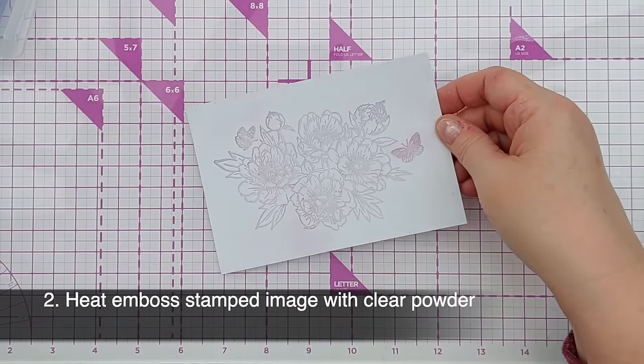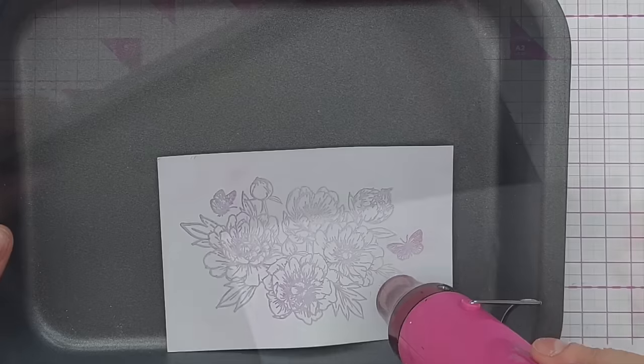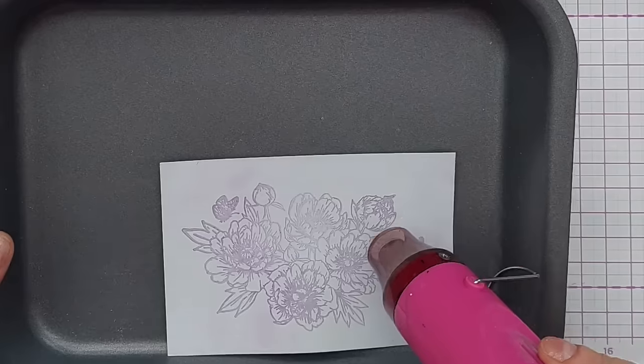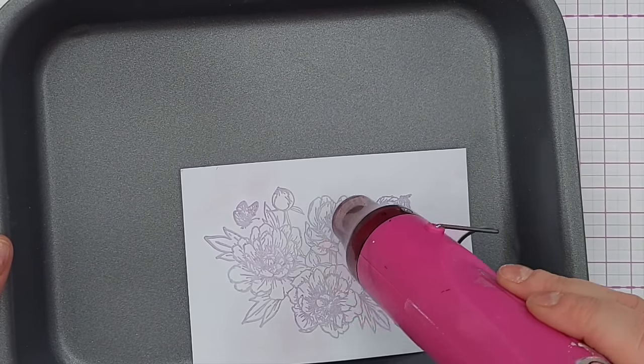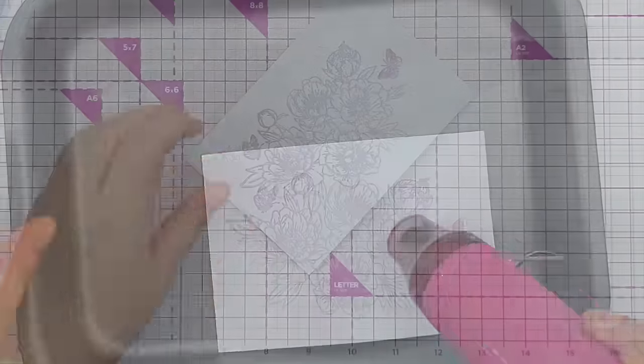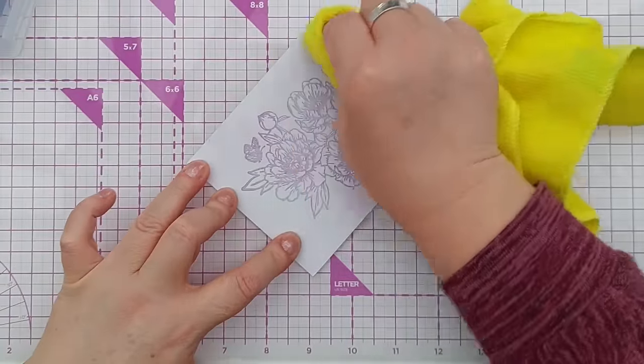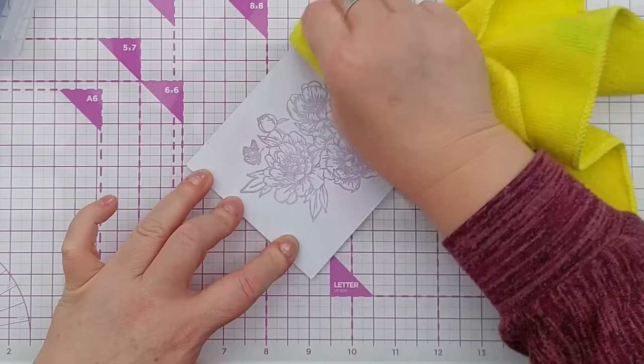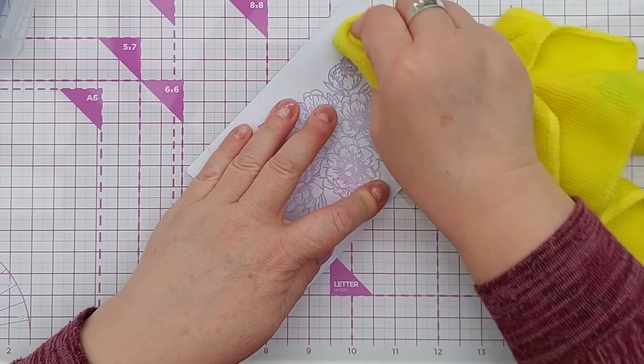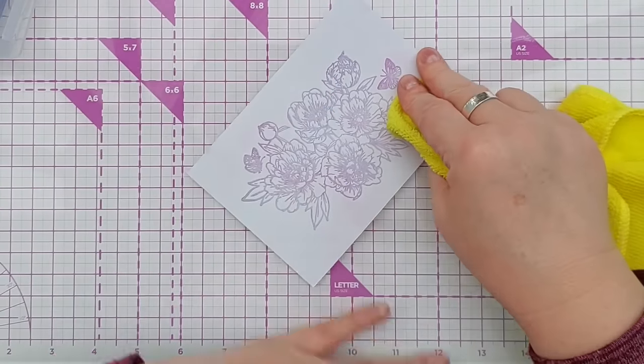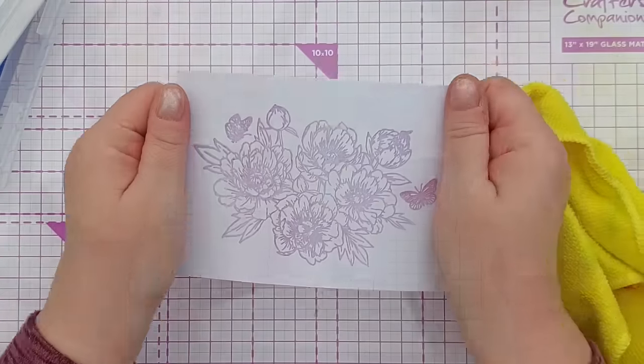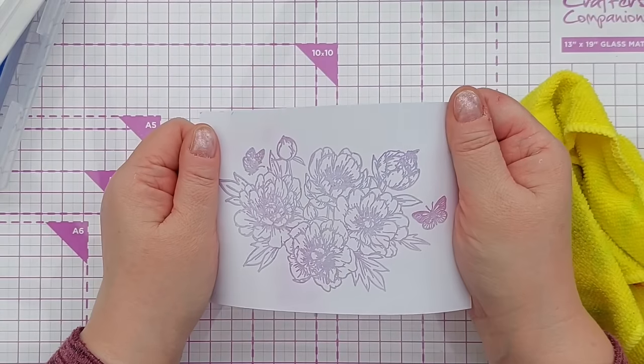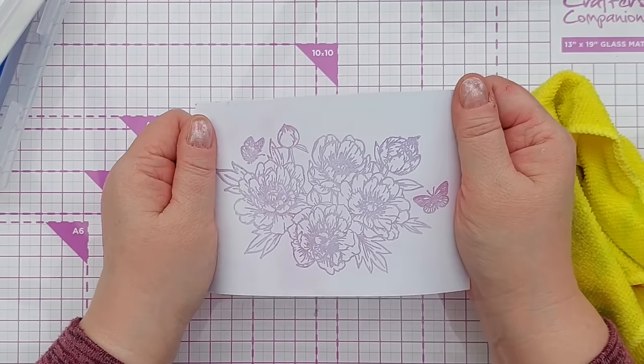And now the embossing powder has cooled and set really well. I can get rid of any extra pigment powder, brush that off, and now I've got a really pretty light pastel shimmery heat embossed image.